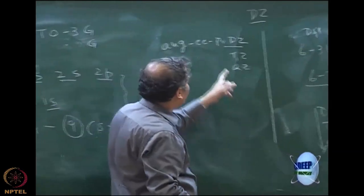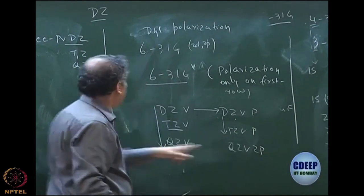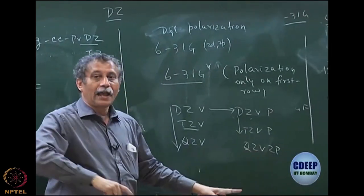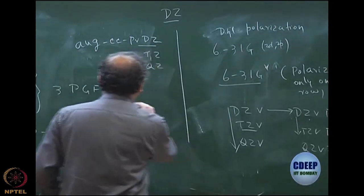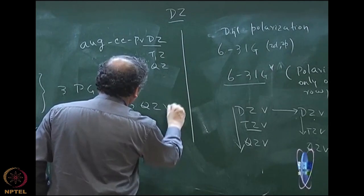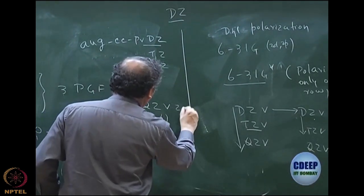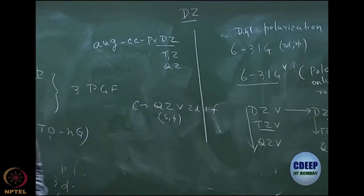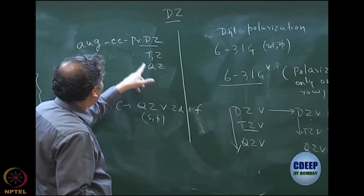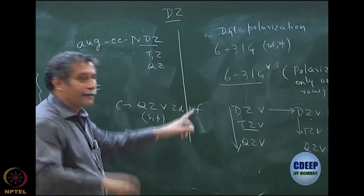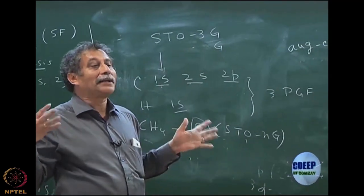Just as I told you — if they are using triple-zeta, they use minimum one polarization; if quadruple-zeta, two polarization functions plus one of the higher angular momentum. For carbon using QZV, you have S and P, then two D functions, one F function. When I say augmented cc-pVQZ, the D and F functions automatically come — people now know that. These are all part of the nomenclature.